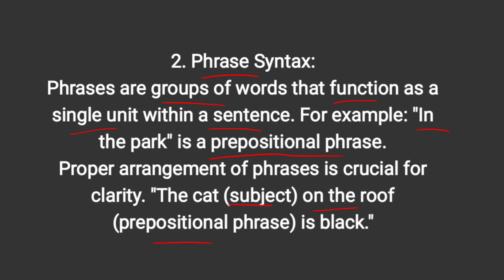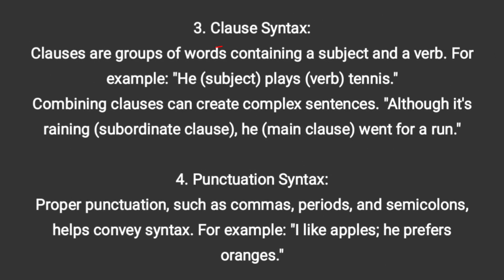The third type is clause syntax. Clauses are a group of words containing a subject and a verb. For example, 'He plays tennis' — 'he' is the subject, 'plays' is the verb, and 'tennis' is the object. Combining clauses can create complex sentences. Clauses have different types: a subordinate clause, such as 'although it's raining,' and a main clause, such as 'he went for a run.'